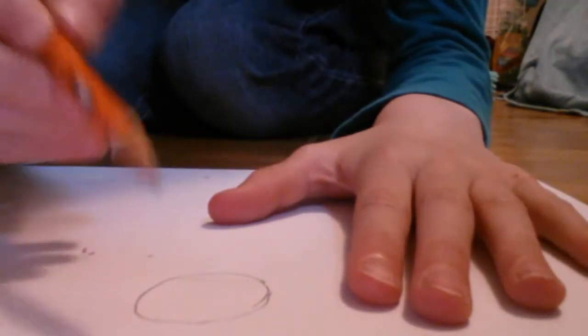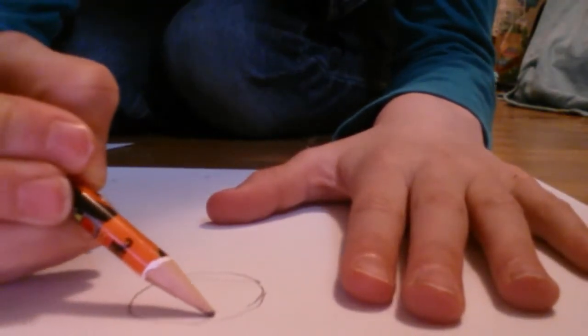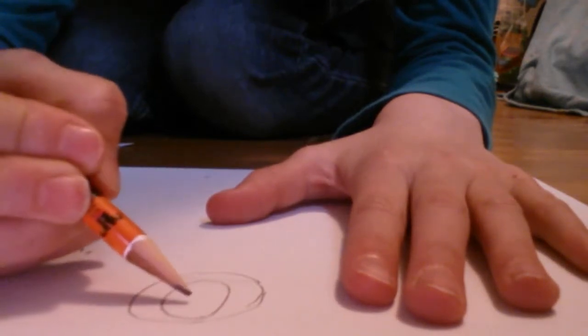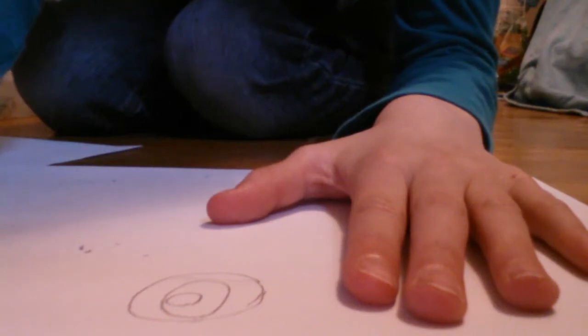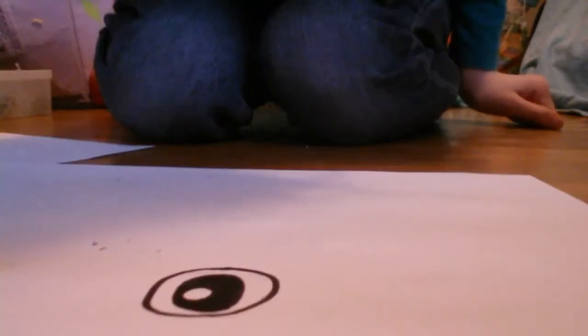Next we're going to draw the details inside the eye. Draw a big oval and a circle inside the oval. Then trace this all with your sharpie. Great!